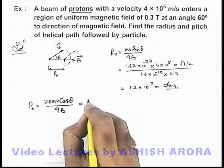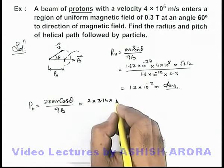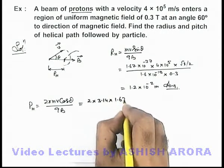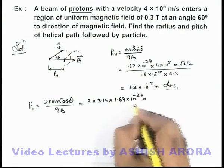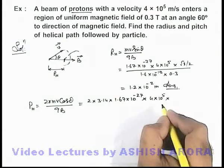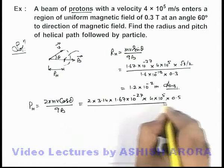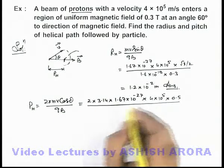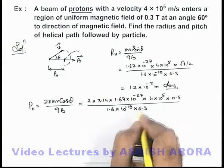If we substitute the values, it'll be 2 × 3.14 multiplied by mass is again 1.67 × 10⁻²⁷ multiplied by the speed is 4 × 10⁵, and cos θ here we can write as 0.5 because theta is 60°, multiplied by qB is 1.6 × 10⁻¹⁹ into 0.3.